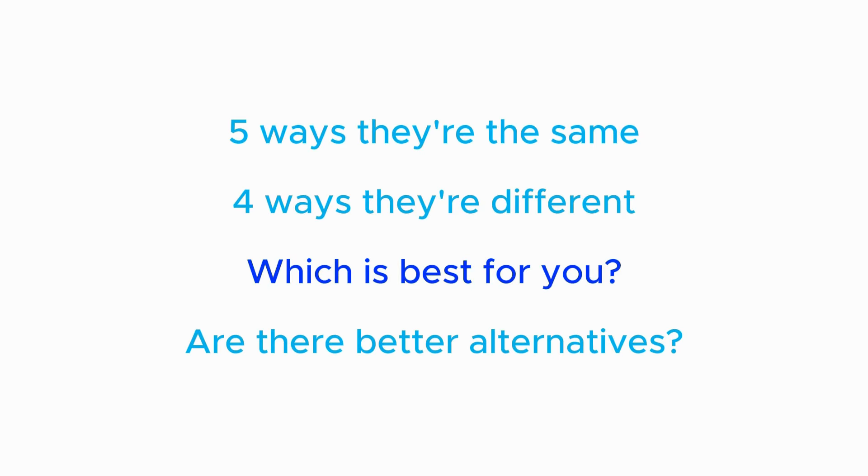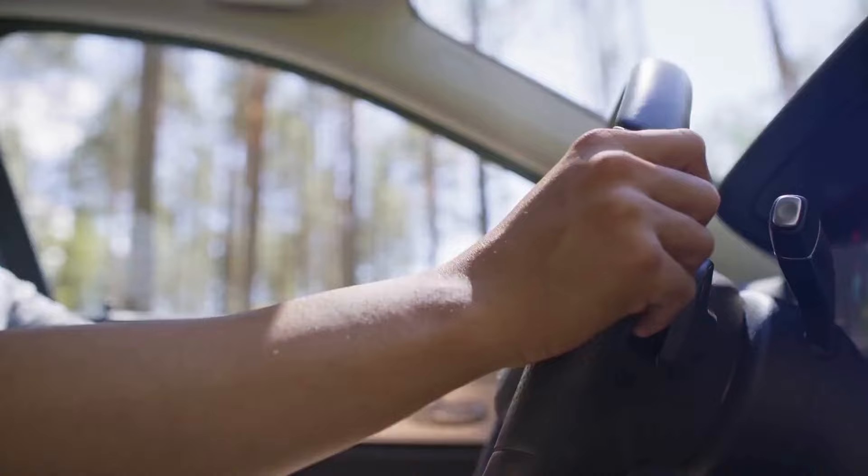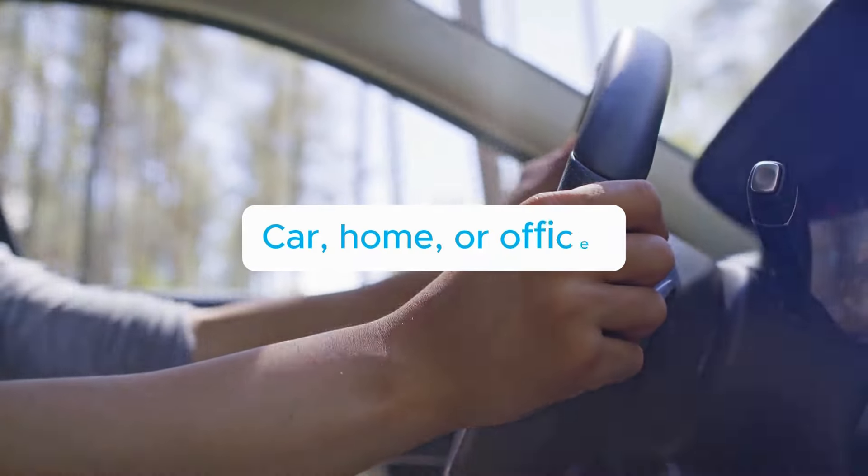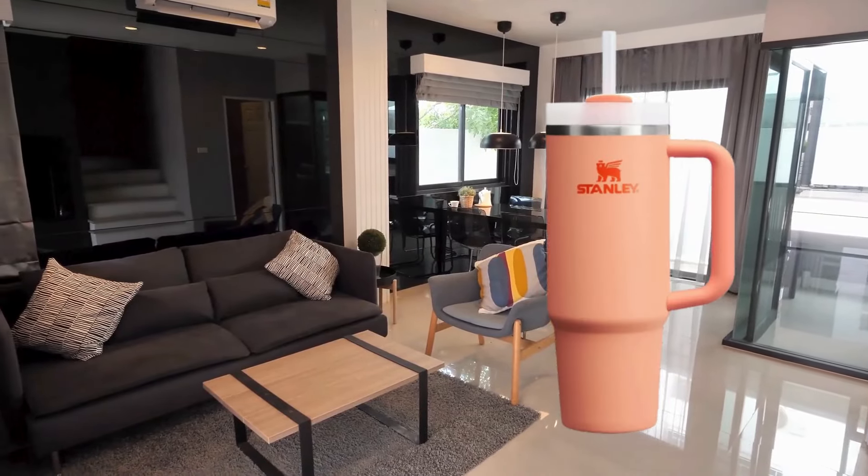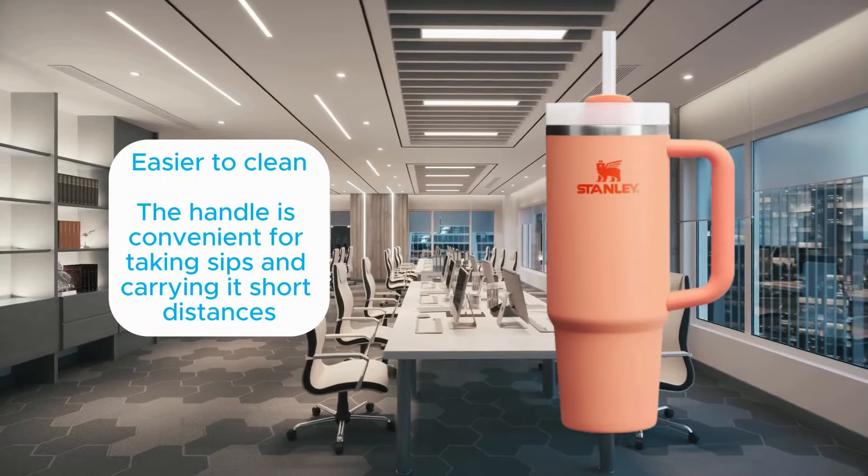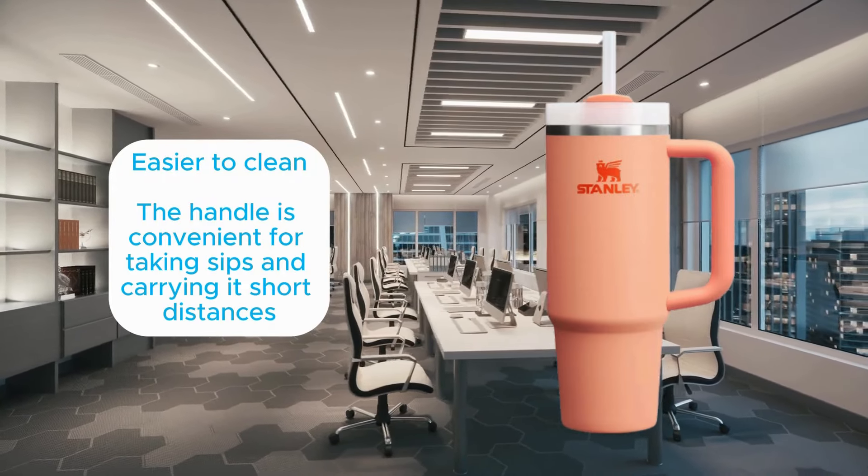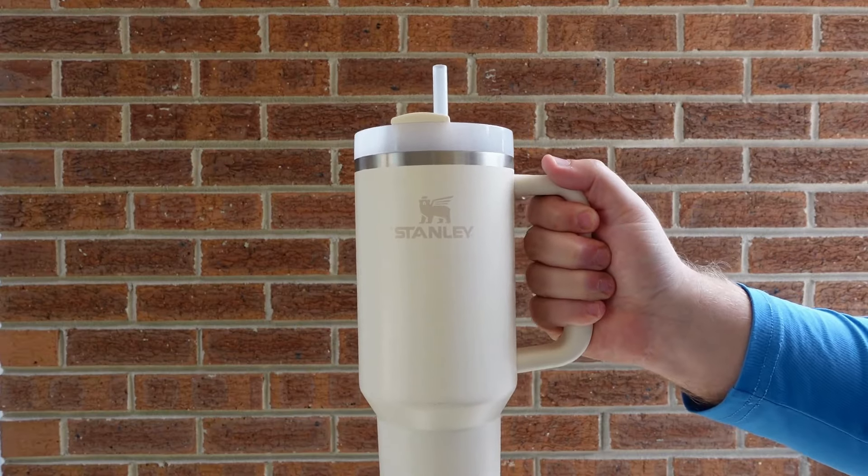So which Stanley tumbler is the best for you? Well, honestly, it depends. If you're using your bottle primarily in the car or at the home or office, Quencher is probably the better option because it's easy to clean and you can use the handle when taking sips. The handle is really convenient when you're not going far.